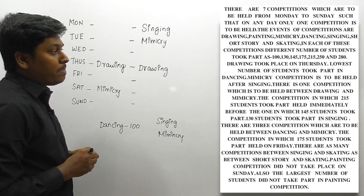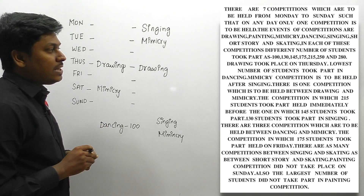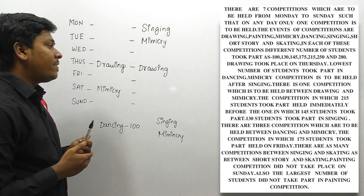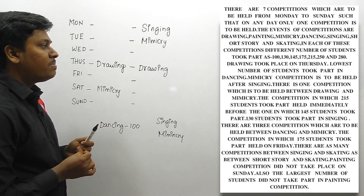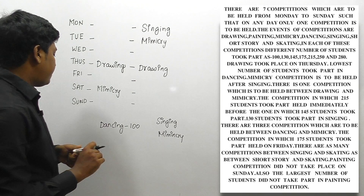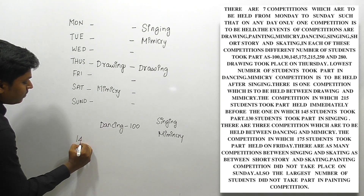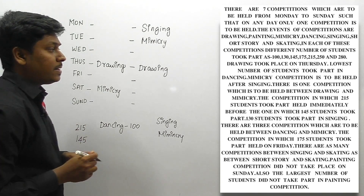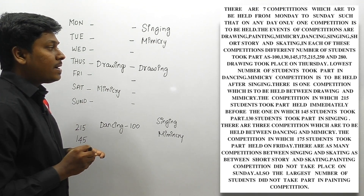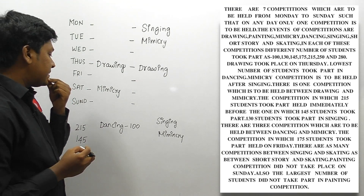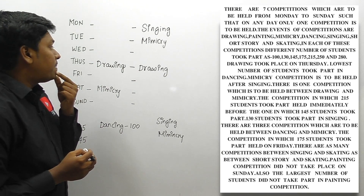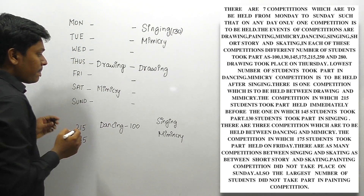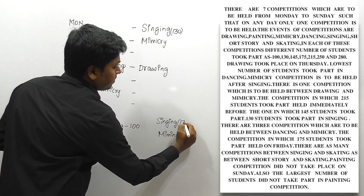Next clue: the competition in which 215 students took part was held immediately before the one with 145 students. So immediately before 145, it should be 215. Also, 130 students took part in singing — that's a direct statement, so singing is assigned 130 students.